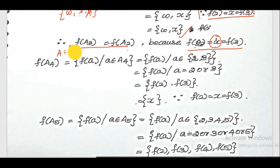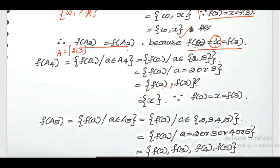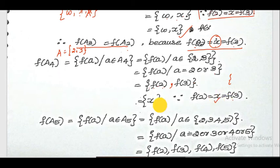For f(A4): A4 = {2, 3}, so a takes the value 2 or 3. Substituting, f(A4) = {f(2), f(3)}. Now f(2) = x and f(3) = x. Since both values are x, avoiding repetition, f(A4) = {x}.